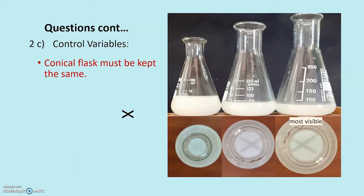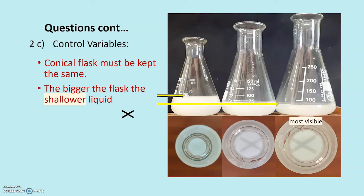The conical flask must be kept the same. The bigger one, as we see over here, would be shallower. Thus causing the cross to be visible for longer. So the shallower one you can see over here, looking at from above, the cross is more visible than the one that is deeper. These two, there wasn't that much difference, but this one is certainly, there's a very faint X over there.